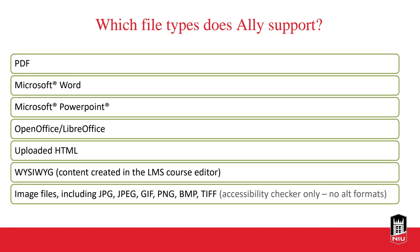File types that Ally currently supports are PDFs, Microsoft Word, PowerPoint, OpenOffice or LibreOffice, uploaded HTML, and WYSIWYG — which stands for 'what you see is what you get' — meaning content created in the LMS content editor. So if you're typing directly into the LMS and you add an image embedded within that WYSIWYG text, it will give you an accessibility score and let you know if you forgot to put alt text for that image or if the font color isn't accessible.